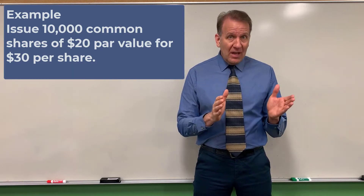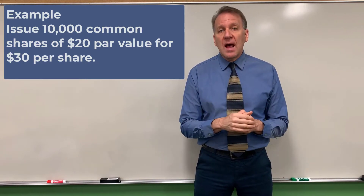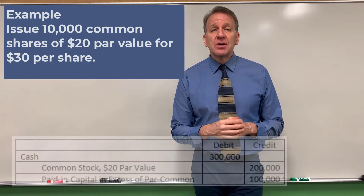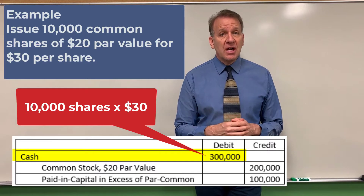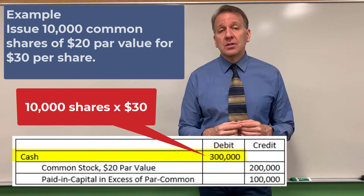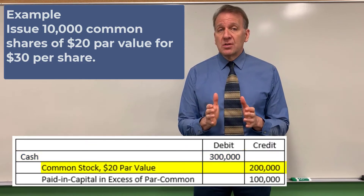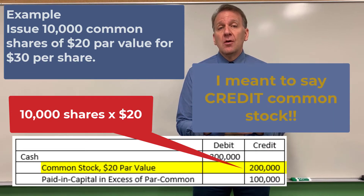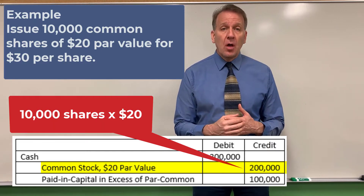The par value — the amount written on the share — is $20, but shares can sell for more or less. In this example, they're selling for $30. Our journal entry is first to debit cash. We take 10,000 shares times $30 per share and get $300,000. So we debit cash $300,000. Now our credit has two parts because the par value is $20. We credit common stock, $20 par value, for $20 times 10,000 shares, which is $200,000.